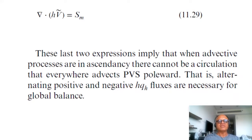So these two last expressions basically imply that when advective processes are dominant there cannot be circulation everywhere that directs PVS poleward, which we had seen before as well. And this shallow water model is just affirming that. So we took the full equation, we are still taking the full equation and we are saying that the previous advection cannot be unidirectional poleward.